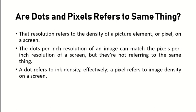Resolution refers to the density of picture elements, meaning the number of pixels. The more pixels you have, the higher the resolution. DPI resolution for images and pixel-per-inch resolution may seem related, but they are different things. DPI refers to ink density — how dense, clear, and sharp the printed image is — while pixels refer to image density on a screen. Therefore, dots and pixels are different things.